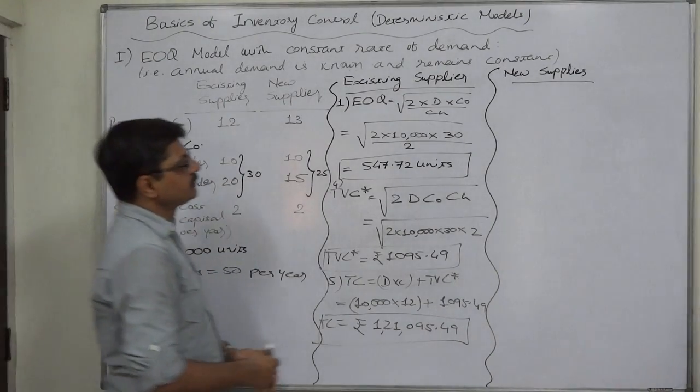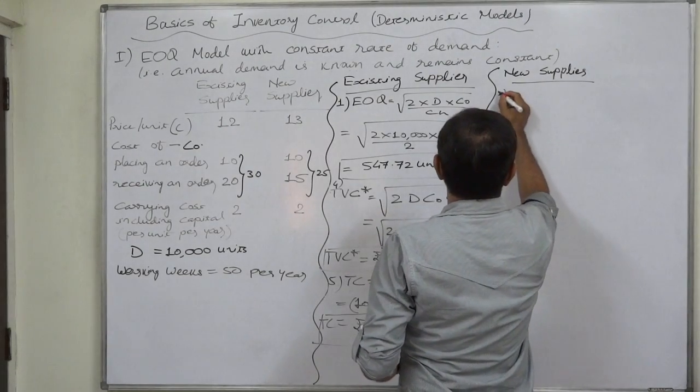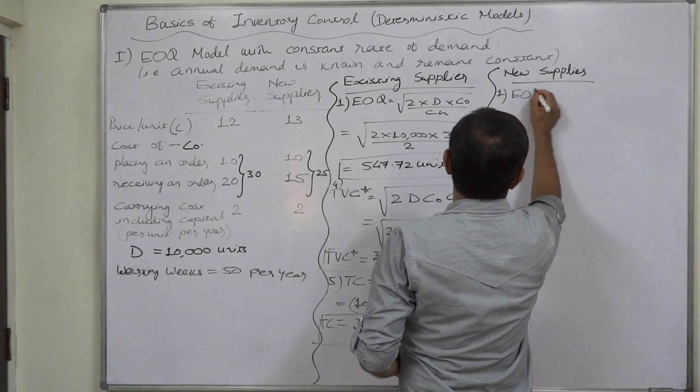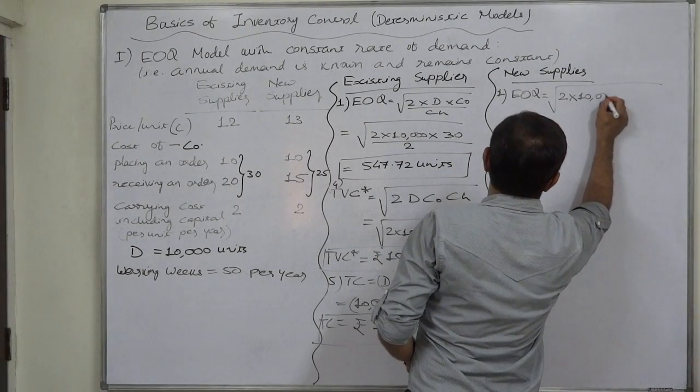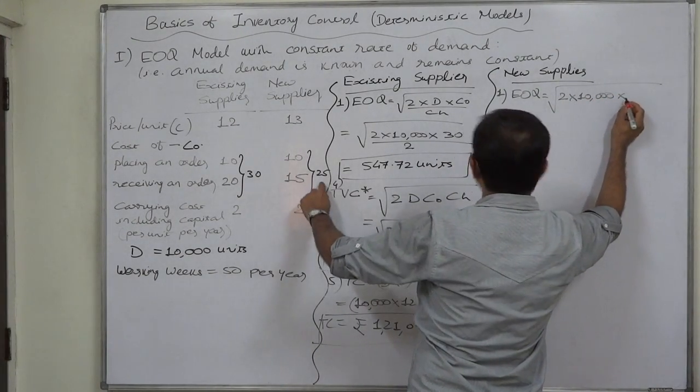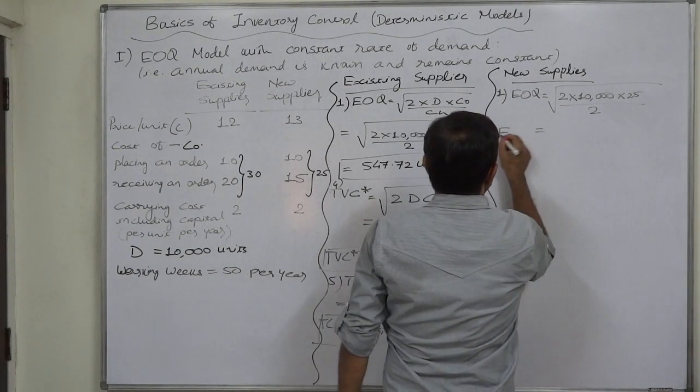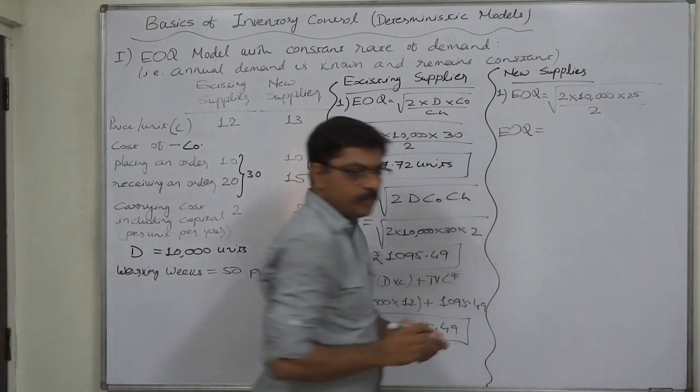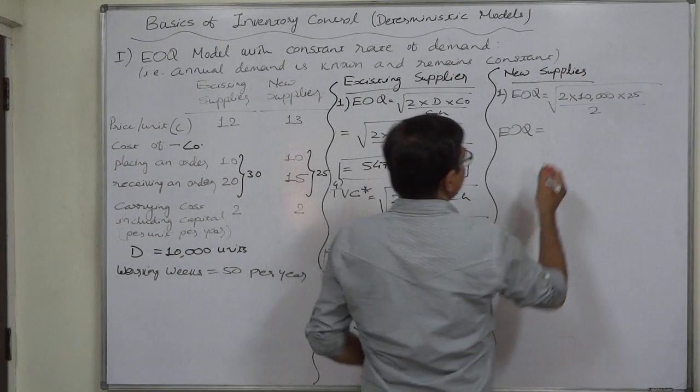Now let us make calculations for the new supplier. Number 1, EOQ: that will be square root of 2 into 10,000 into 25, ordering cost has changed to 25. So economic order quantity or optimal order size in this case is 500 units.